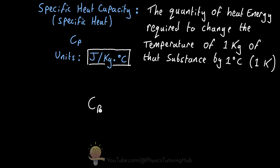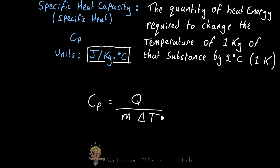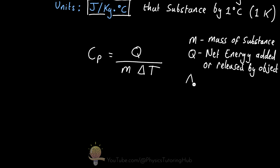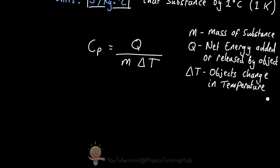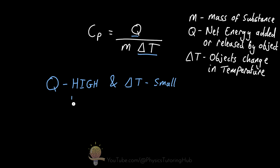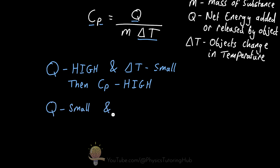The equation for specific heat can be written as: the specific heat capacity at constant pressure equals the net heat energy transferred into or released by the substance, divided by the substance's mass and divided by the temperature change the substance experiences. This tells us that if the heat transfer Q is high but the change in temperature remains small, then the specific heat capacity is high. But if the change in temperature is large when there's only a small change in heat transfer, then the specific heat capacity is low.